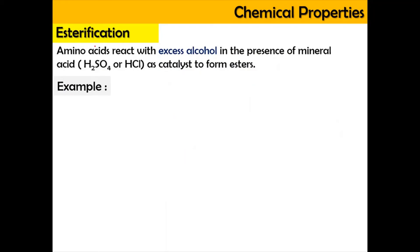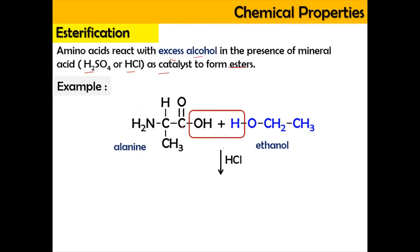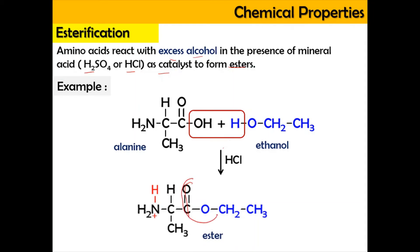Now we move on to the next reaction: esterification. An amino acid can react with excess alcohol in the presence of a mineral acid — for example H2SO4 or HCl — as a catalyst in order to form an ester. For example, alanine (2-aminopropanoic acid) reacting with ethanol: the –OH group from the carboxyl and the hydrogen from the ethanol are removed as water, and the carbon and oxygen bond together to form an ester bond — an ester functional group.